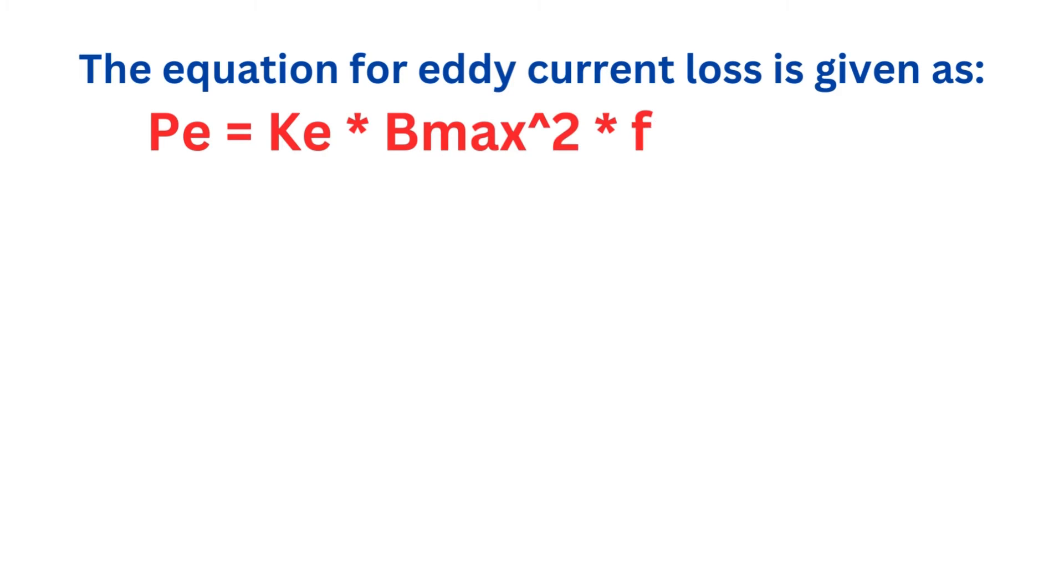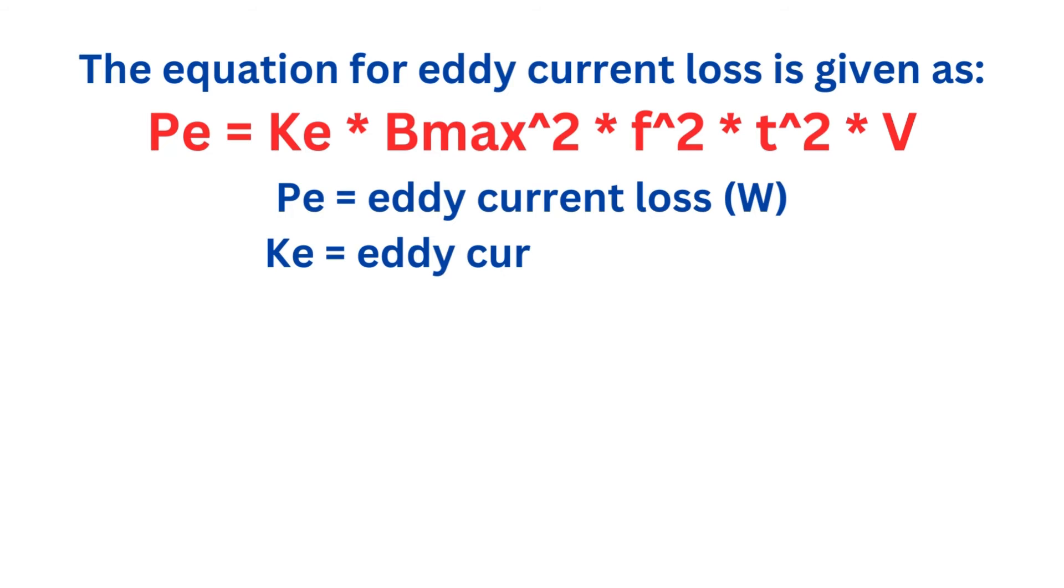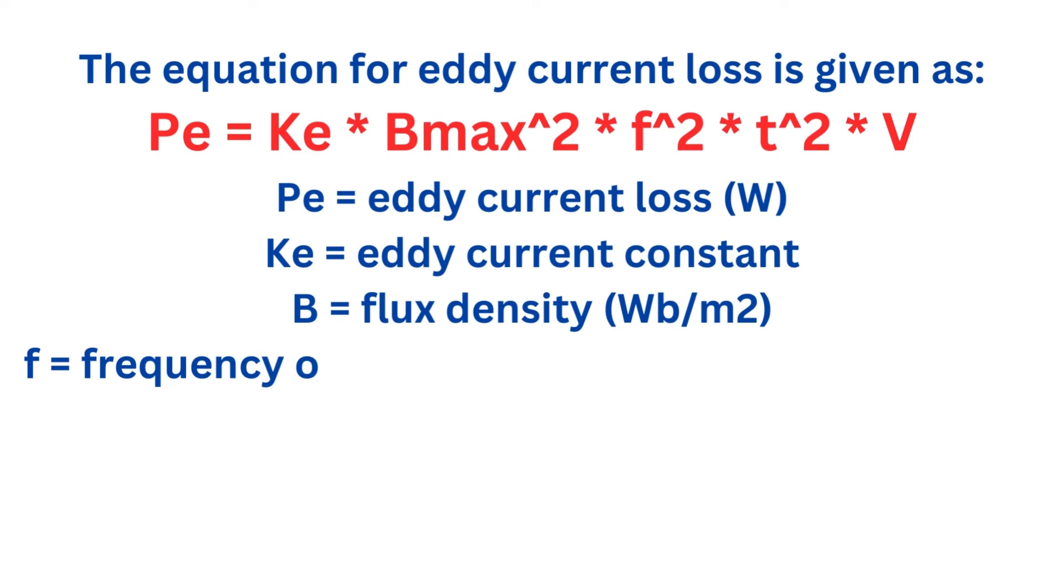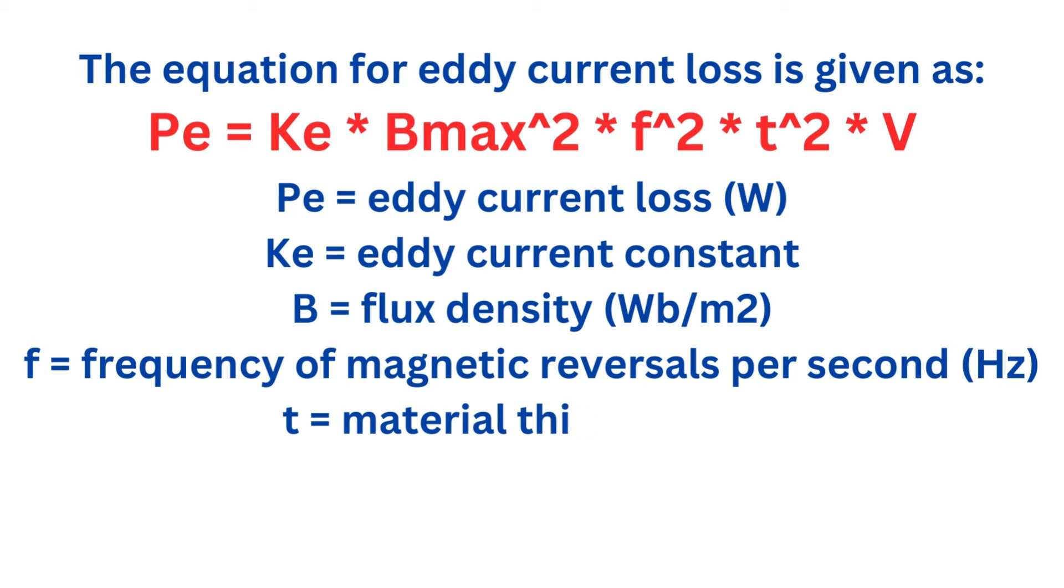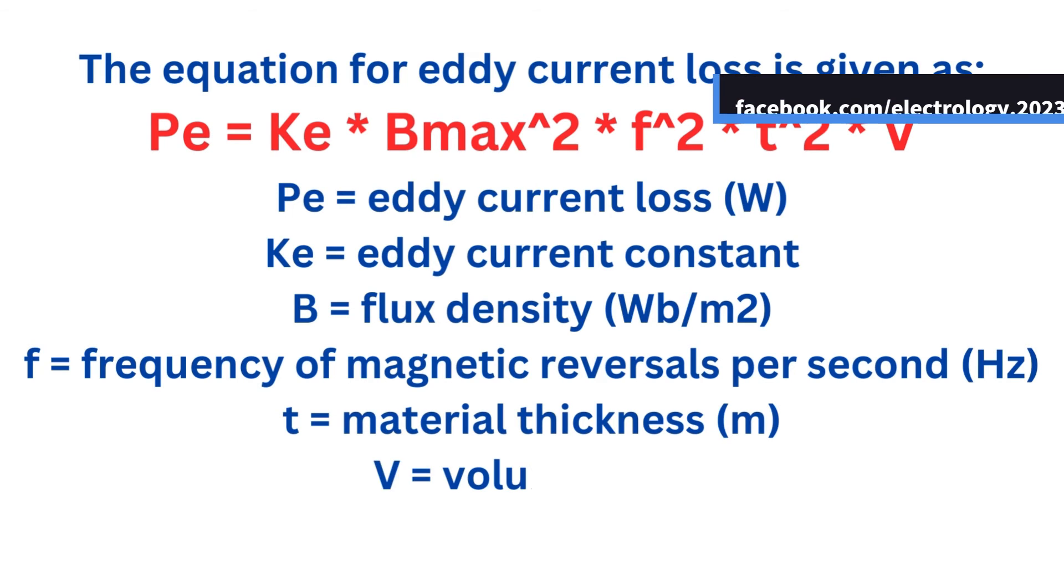Let's break down the formula for eddy current loss. P equals Ke times Bmax squared times frequency squared times material thickness squared times volume. Here, Ke is the eddy current constant. Bmax represents the maximum flux density. F is the frequency of magnetic reversals. T is the material thickness, and V is the volume of the material. Understanding and minimizing eddy current loss is crucial for improving the efficiency of electrical machines.